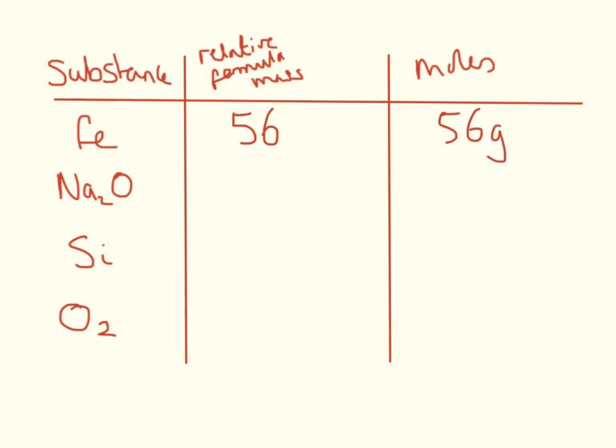This is sodium oxide here, the relative formula mass is 62. So one mole of sodium oxide is going to weigh 62 grams. Silicon from the periodic table, I can see that silicon's formula mass is 28. So that means one mole of silicon is going to weigh 28 grams. Oxygen gas, the relative formula mass is 32. So one mole of oxygen gas is going to weigh 32 grams.